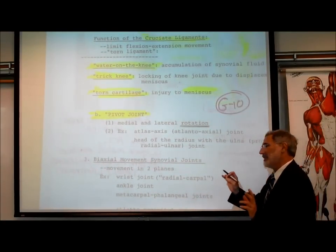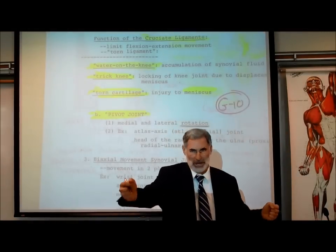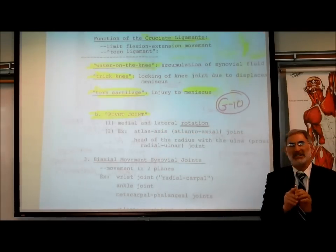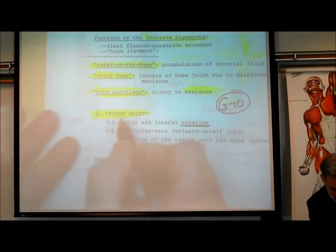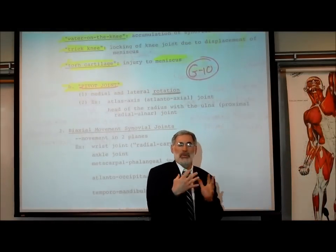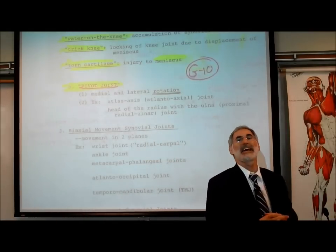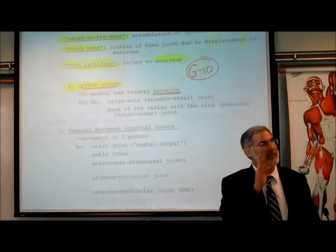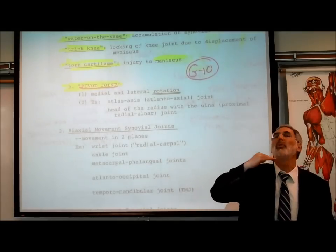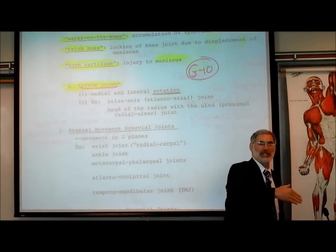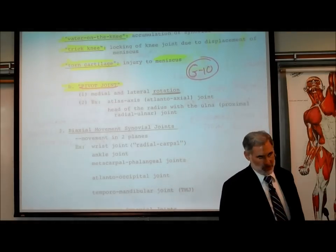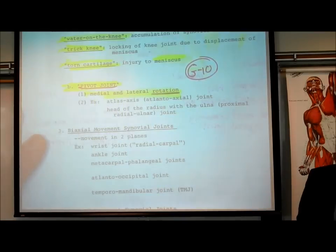The second type of uniaxial movement joint is the pivot joint. An example is between the atlas and the axis, where you can rotate your head laterally to the side or bring it back to the midline. This is movement in one axis or plane, but rather than flexion and extension, it involves medial and lateral rotation.